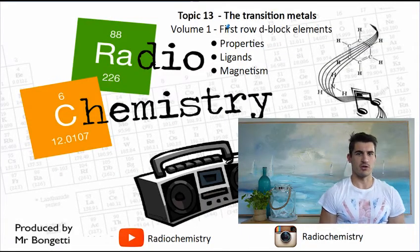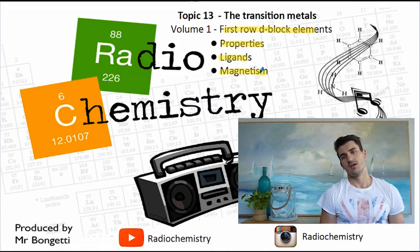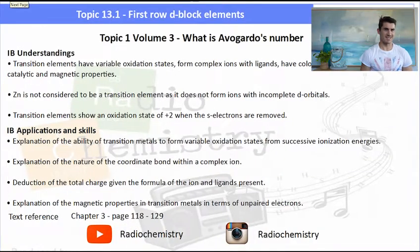Volume 1, first row d-block elements. We need to look at properties, ligands, magnetism. IB key understandings and outcomes are listed here and also the applications. We need to know about transition metals, their variable oxidation states, why they form complex ions with ligands, why they're colored and display catalytic and magnetic properties. We need to be able to explain those oxidation states for ionization energies with coordinate bonds and coordination numbers. Textbook reference is page 118 and 129, check it out.